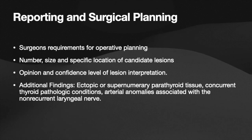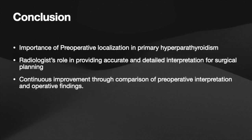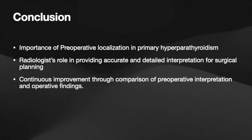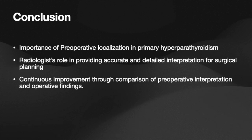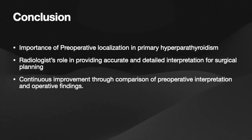Less commonly, inferior glands will be within the carotid sheath or intrathyroidal. In conclusion, what radiologists can provide to help surgeons plan accurate surgery includes: the number and size of lesions, precise localization, and the radiologist's opinion and confidence level — using words like 'consistent with' when confident, or 'may represent' or 'probably represents' when less certain. Associated thyroid pathologies, ectopic or supernumerary parathyroid tissue should also be described.